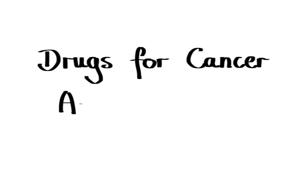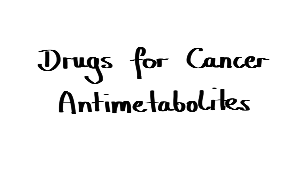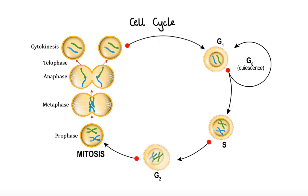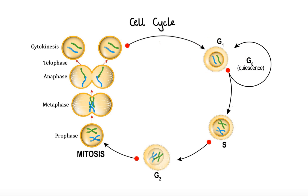In this second part of the lecture covering the pharmacology of drugs used for treatment of cancer, we are going to discuss anti-metabolites. In the last lecture on cancer drugs, we covered agents that mostly affected cells in the G1 phase of the cell cycle. In this presentation, we'll shift our focus to agents that affect the S phase of the cycle.